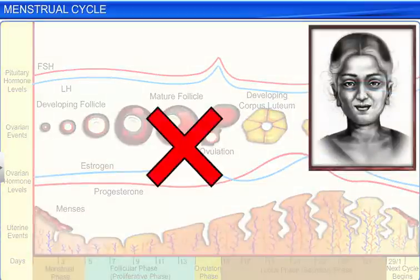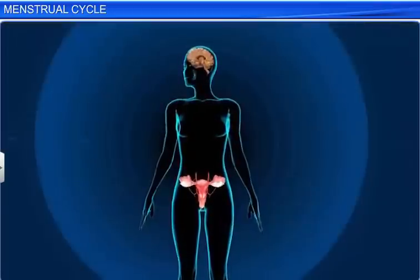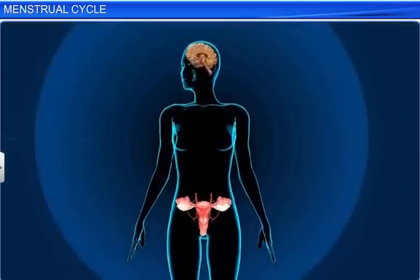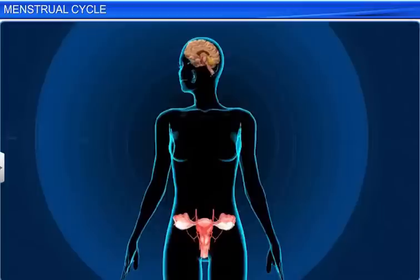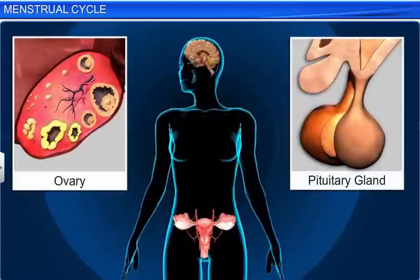Menstrual cycles normally stop once a woman reaches her 50s. This phase is called menopause. The menstrual cycle is an important process in a woman's body, and it consists of four phases which are controlled by hormones released by the ovary and the pituitary gland.